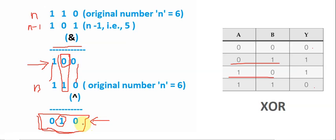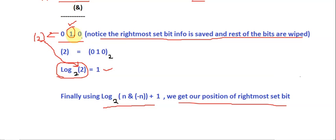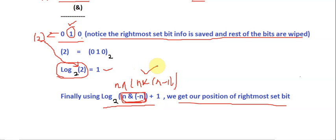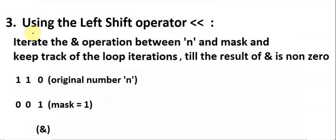That is how we get the format where the rightmost set bit information is saved and other bits are set to zero using the XOR technique. The rest of the process is the same as the previous method: take the log of that result and add one. The operation here is n XOR (n AND n minus one) instead of n AND minus n.